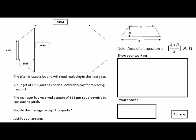So it's A plus B divided by 2 times the height. You'll have to turn your paper around to see the height—the height's 18 meters, and the A would be the 60 meters and the B would be the 90 meters.